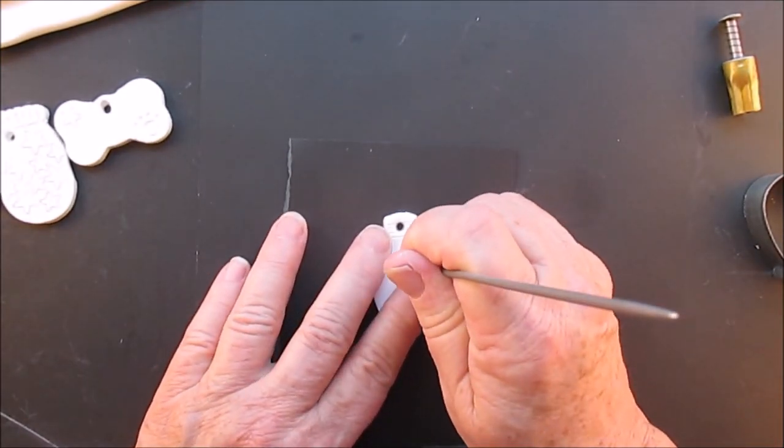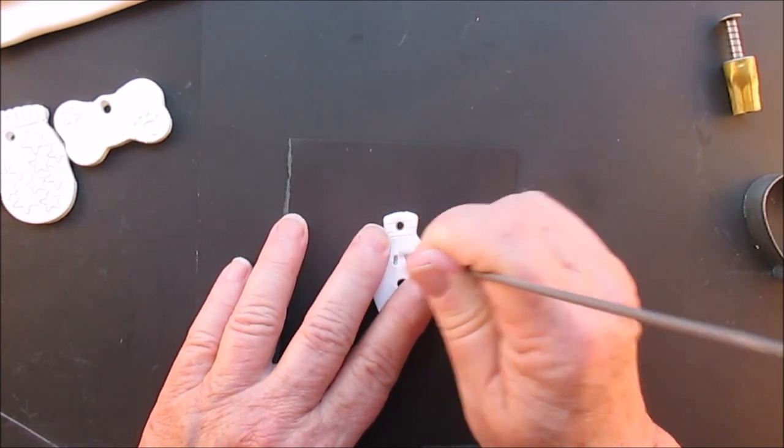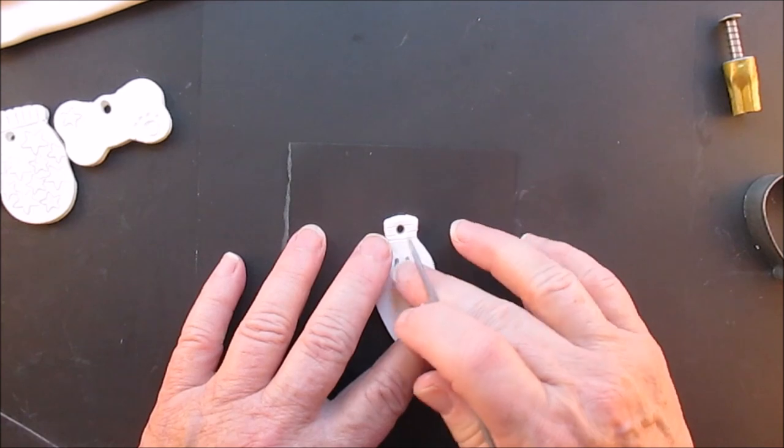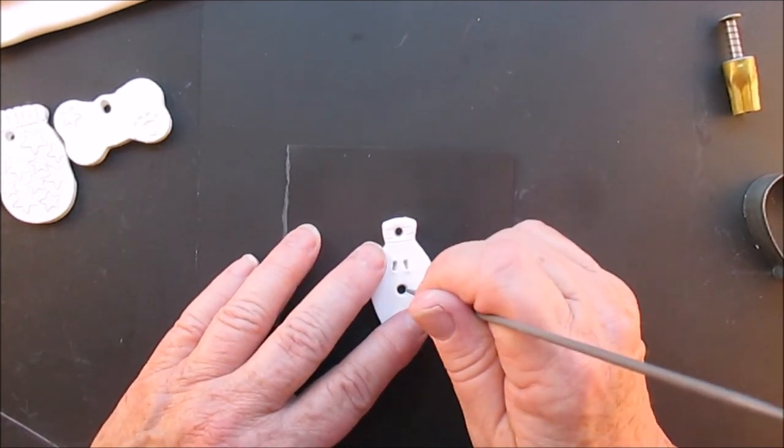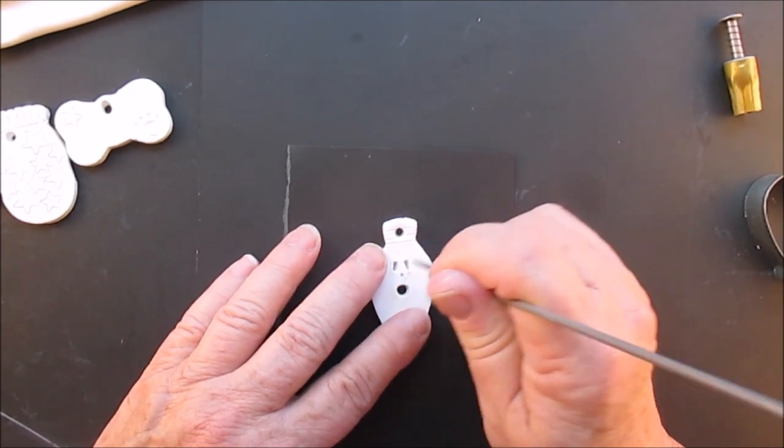This is the little light bulb. We're going to put a little face on him. Again, you can do whatever you want and I made a hole for his mouth.